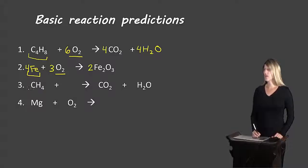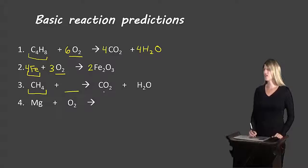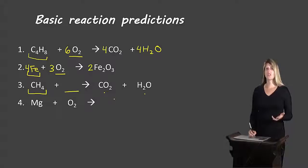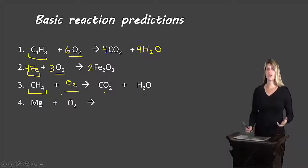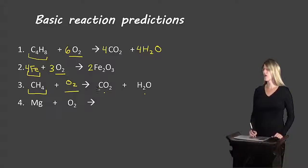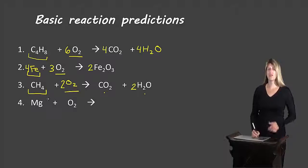We have CH₄, which is a hydrocarbon because it has hydrogen and carbon, plus something, giving us CO₂ and H₂O. We know CO₂ and H₂O are the products of combustion, and combustion requires a reactant to react with oxygen — so what's missing is O₂. To balance: one carbon on each side looks good. We have 4 hydrogens on the left, so we put a 2 in front of H₂O. Now we have 2 oxygens from CO₂ plus 2 from H₂O = 4 oxygens on the right, so we put a coefficient of 2 in front of O₂ — 2×2 = 4, and we're balanced.